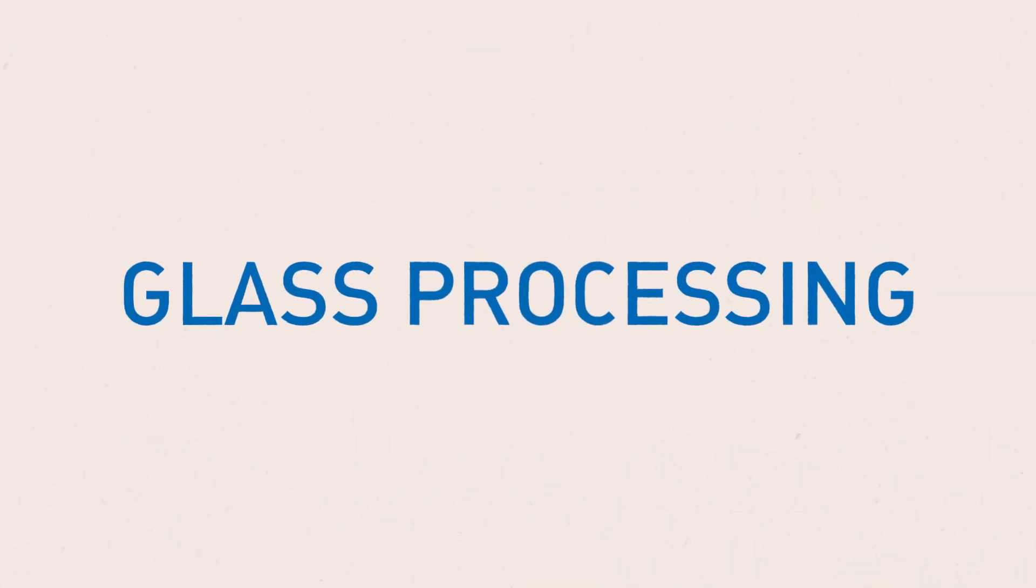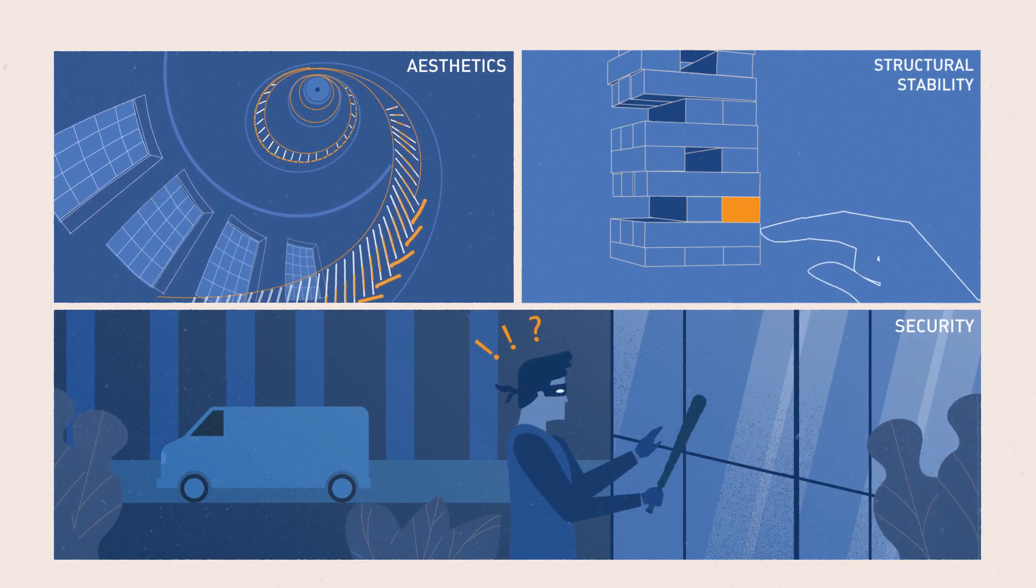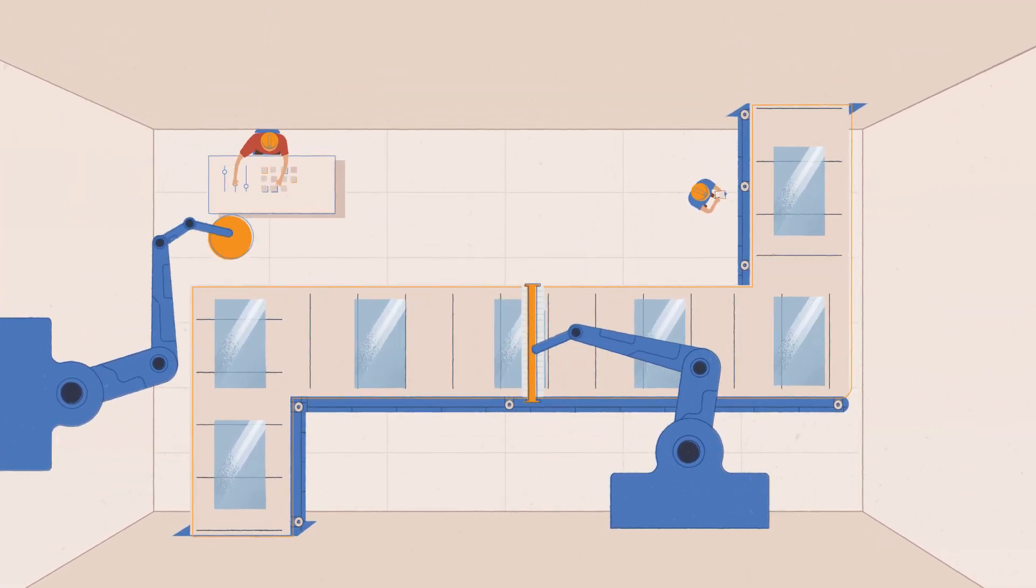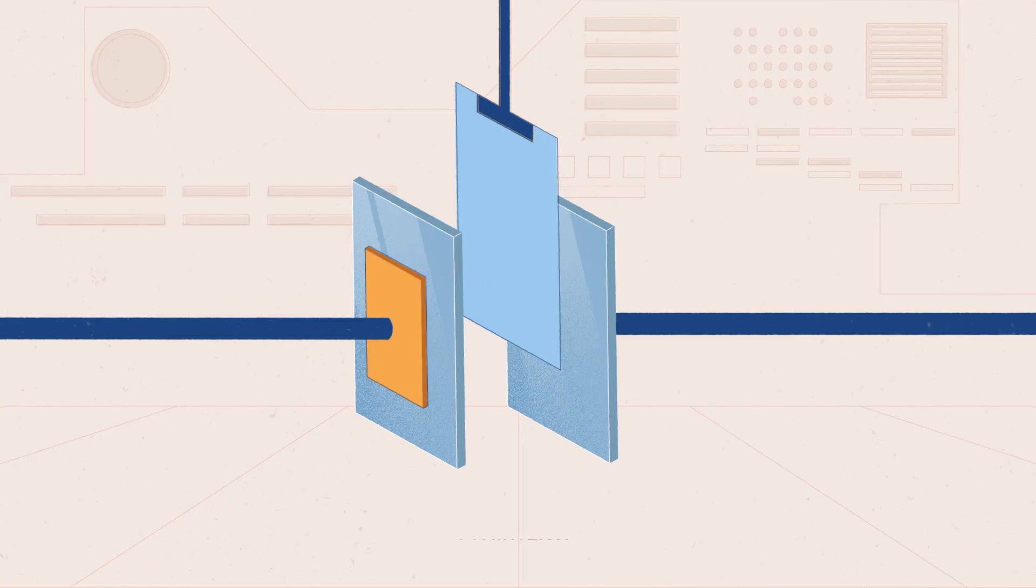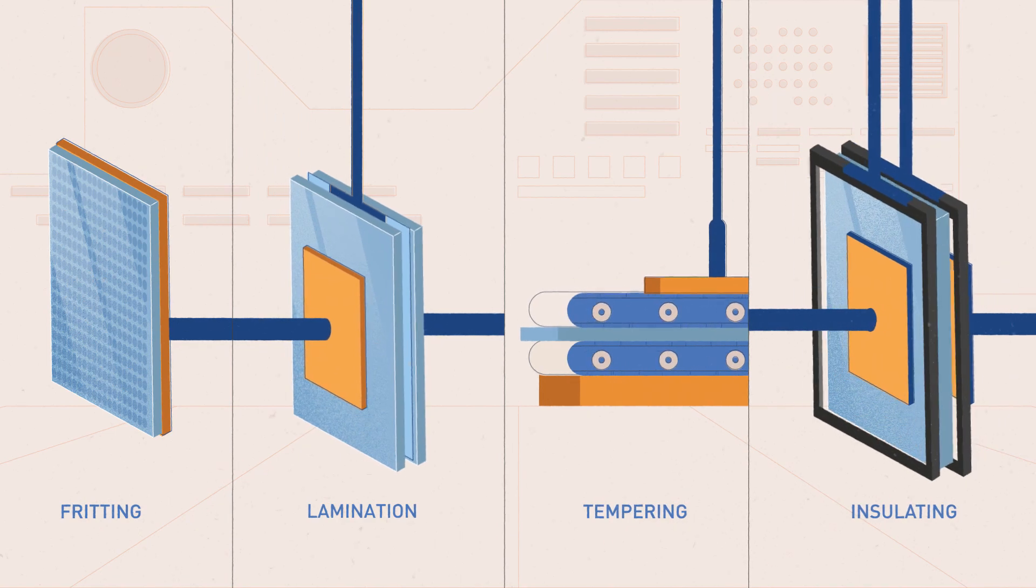Glass processing. Apart from aesthetics, the structural stability and security of a building are very important, especially in high-rise construction. AIS has state-of-the-art facilities that provide glass with the latest techniques and processing methods that include lamination, tempering, fritting and insulating glass units.